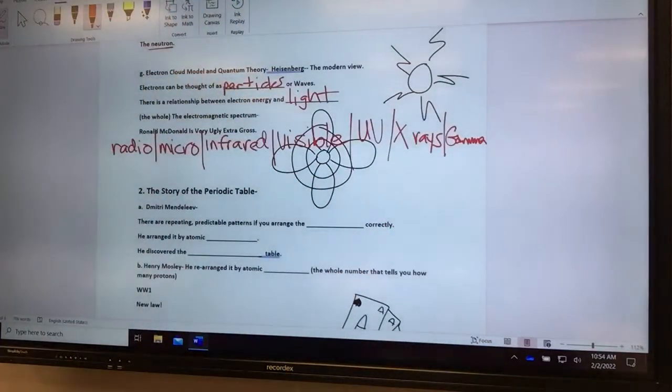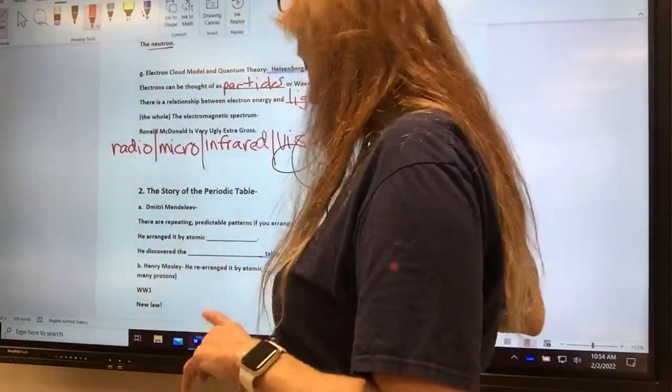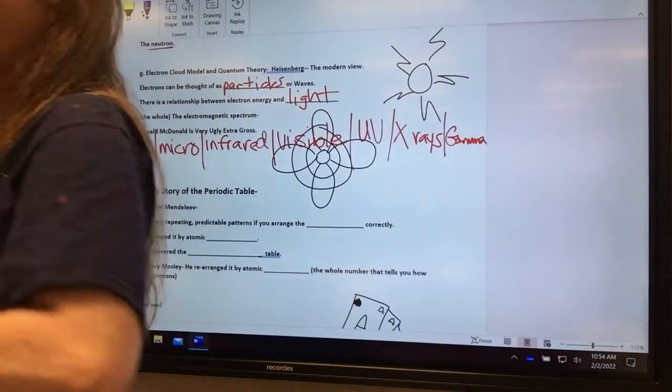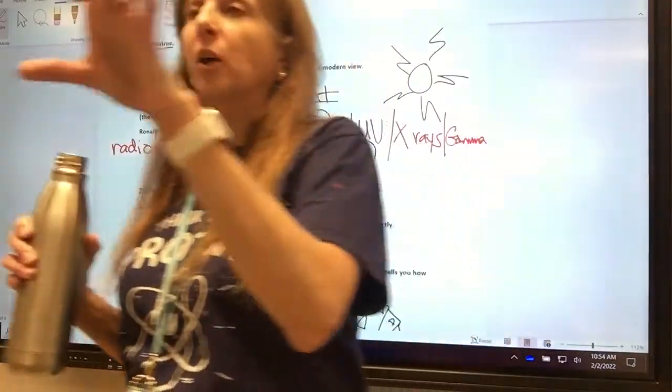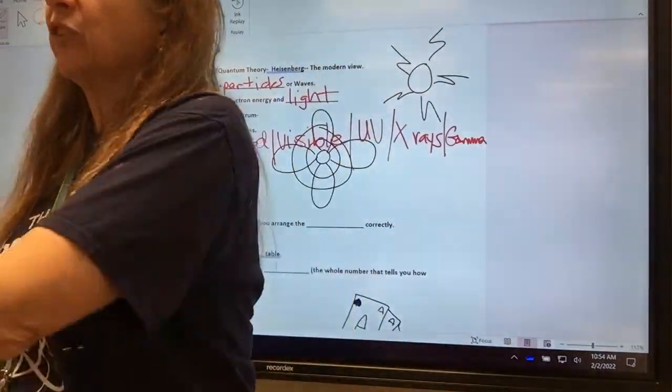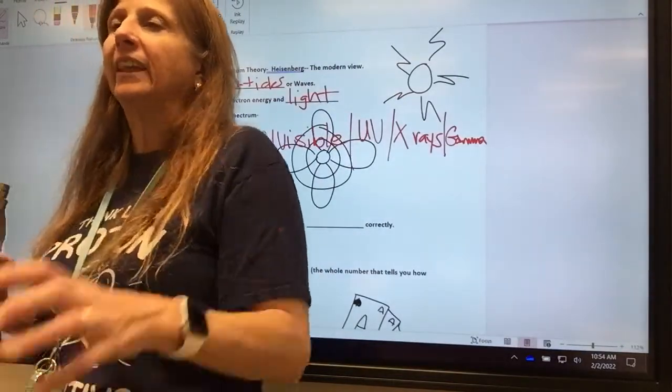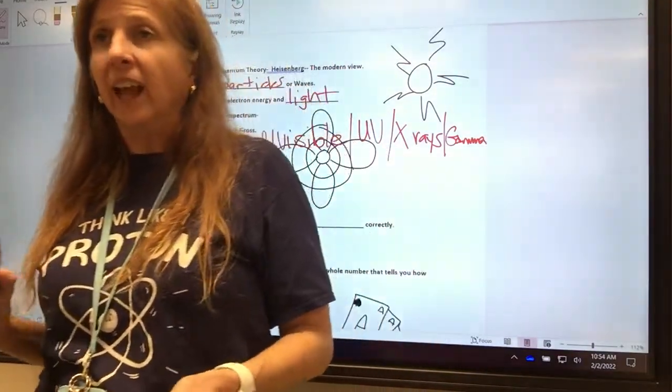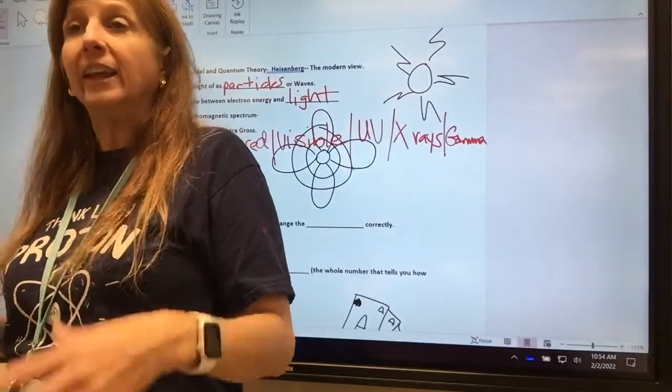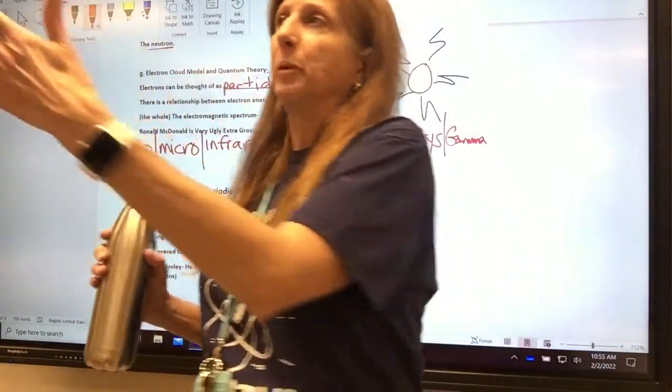He was like, no, I got too much to do. They said, bring it with you. So what he did is he wrote on playing cards. That's why there's cards right there. He took a set of playing cards and put paper on them. And he wrote everything that was known about all the elements on these playing cards. He'd take them to the bar and he'd spread them out and he'd rearrange them because he could see there were patterns in the elements and he wanted to discover it.